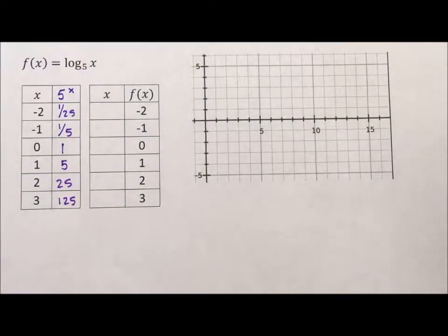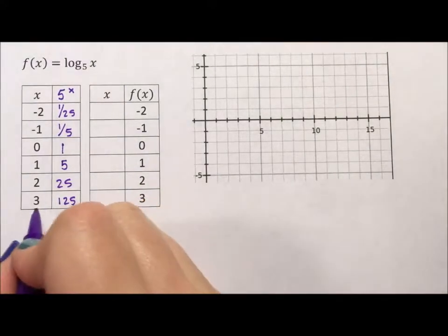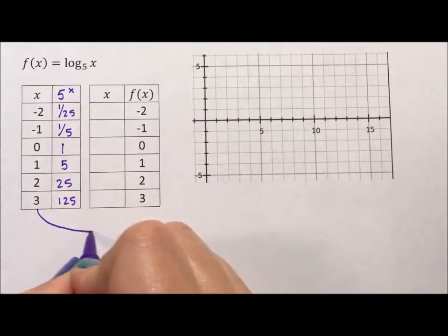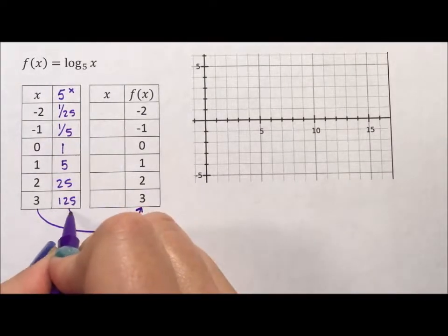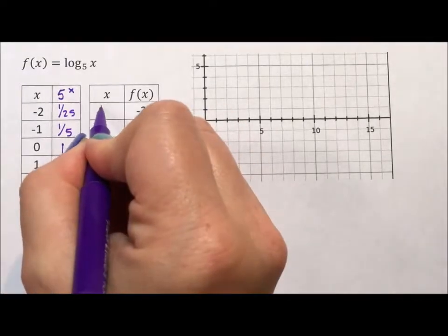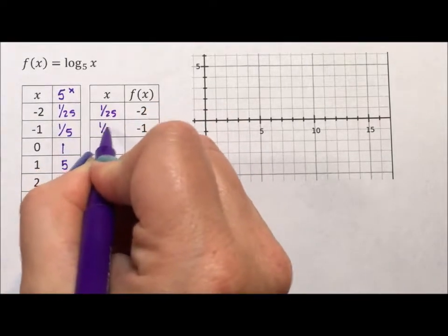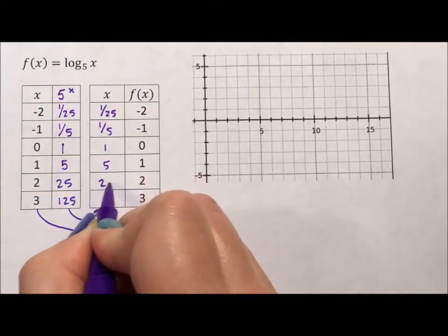The thing about inverses is they just mean you switch your x's and your y's. Your x's become your y's, which I've already done for you, and your y's become your x's. So this becomes 1 over 25, 1 fifth, 1, 5, 25, and 125.